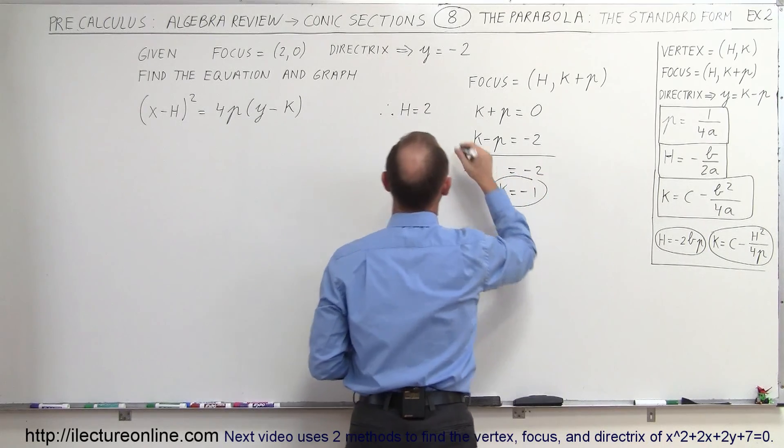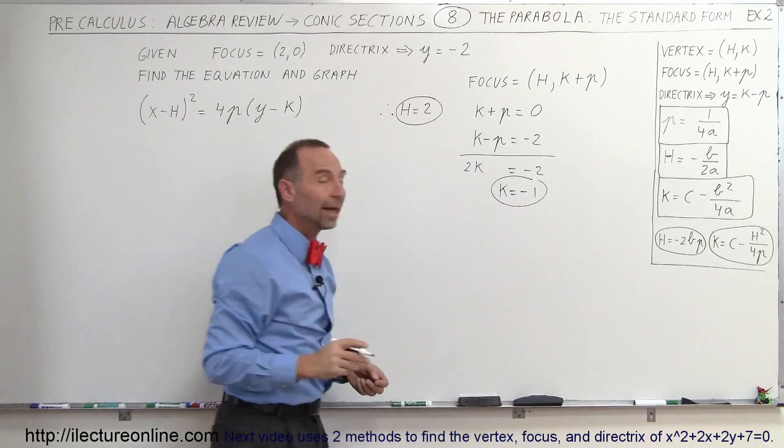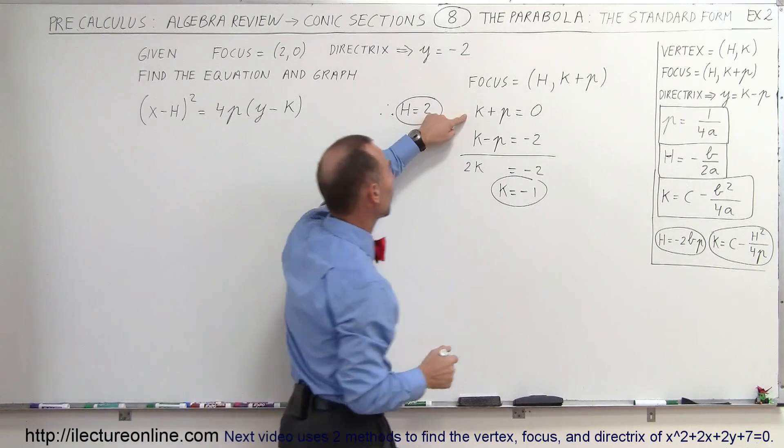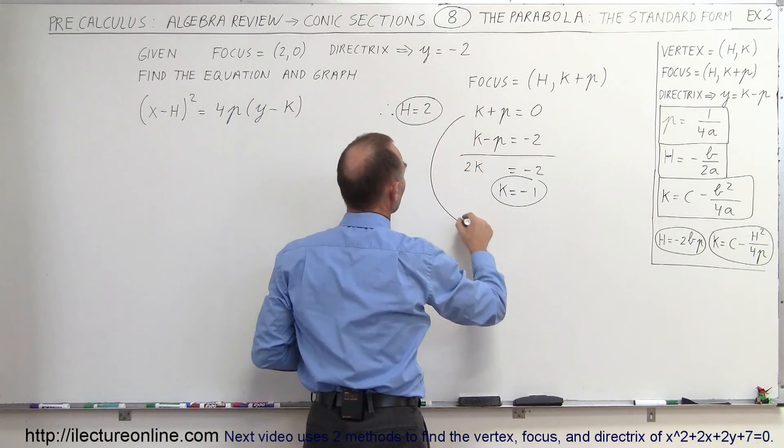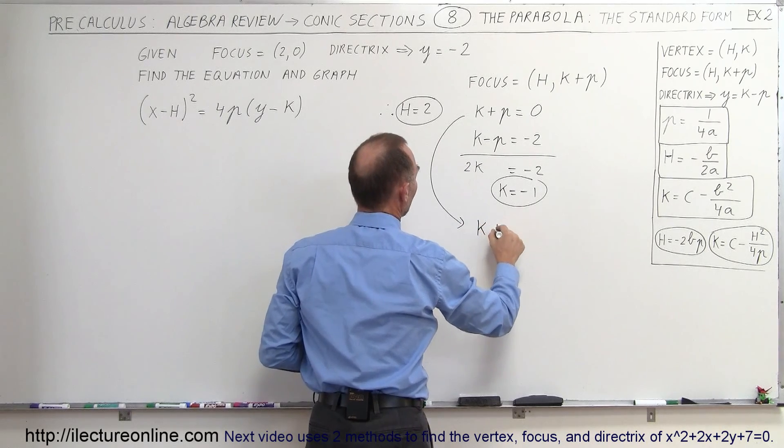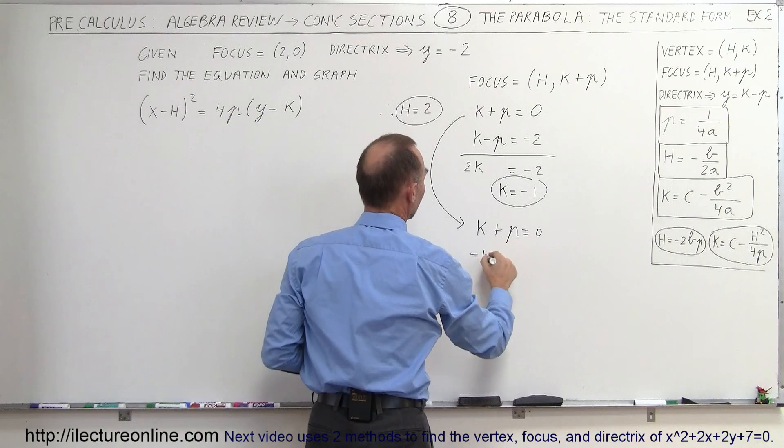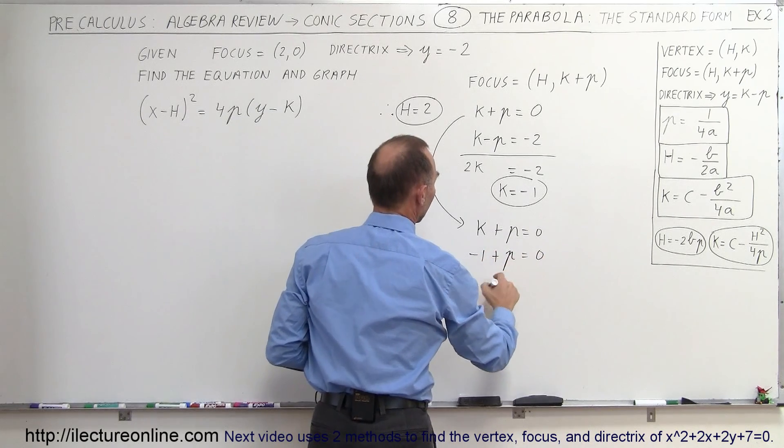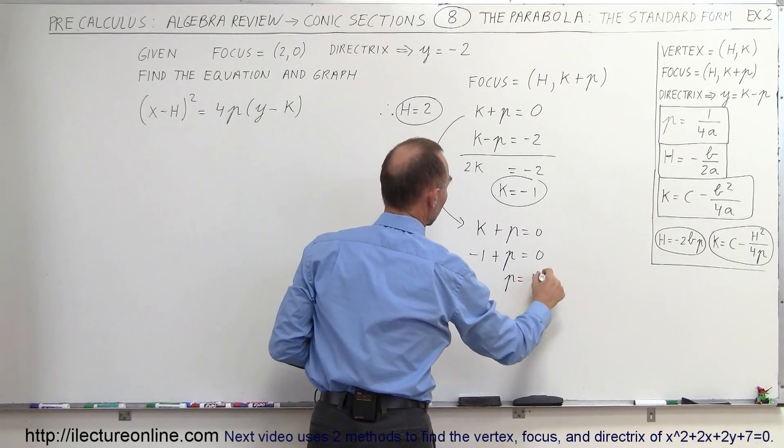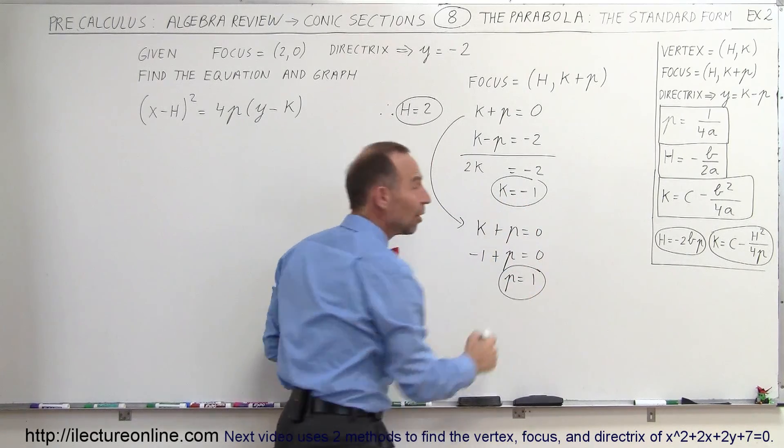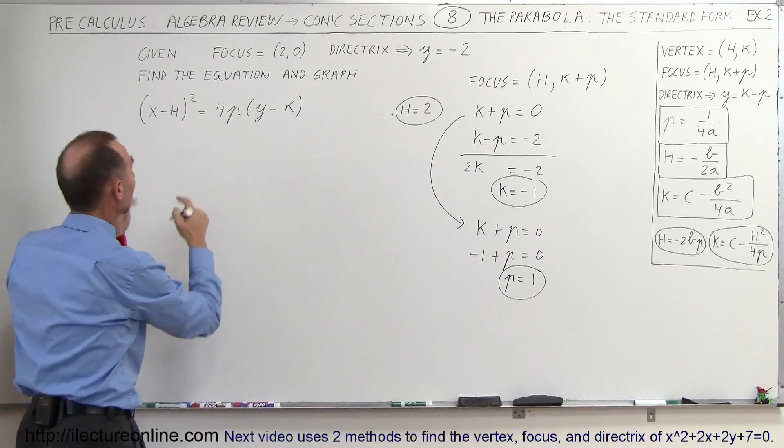Alright, now we have found the second unknown k. Now that we know what k is, we should be able to figure out what p is out of one of these two equations. So we can then say that k + p is equal to 0. We know what k is equal to, so -1 + p is equal to 0, and therefore p is equal to 1. Alright, now we know h, k, and p. We are now ready to plug those into our equation.